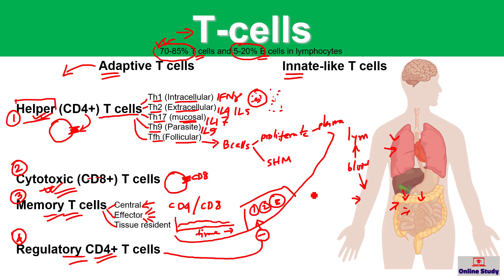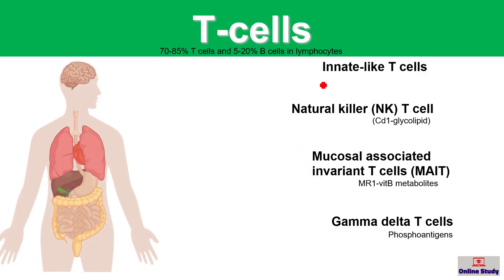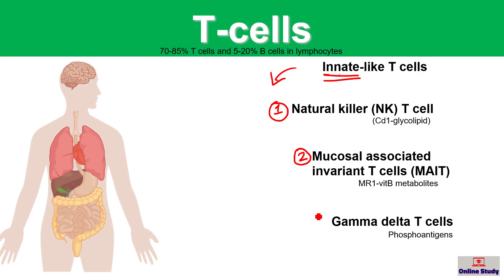Adaptive T cells help for the longer term and have the capacity to enhance their function. Innate-like T cells, by contrast, do not have the capacity to enhance their function after multiple infections. There are different types of innate-like T cells: first, the natural killer T cell (NKT); second, the mucosa-associated invariant T cell (MAIT cell); and third, the gamma delta T cell. They are categorized based on what type of molecule they can recognize.